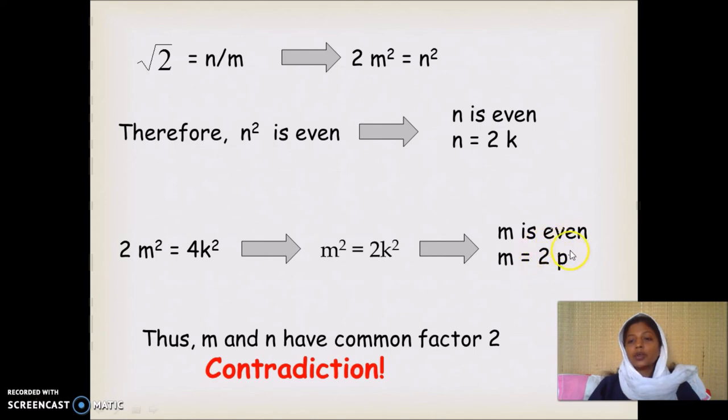Since there is a factor 2, 2p will be even. Now n is 2k and m is 2p. That means that they have a common factor 2, which is a contradiction.